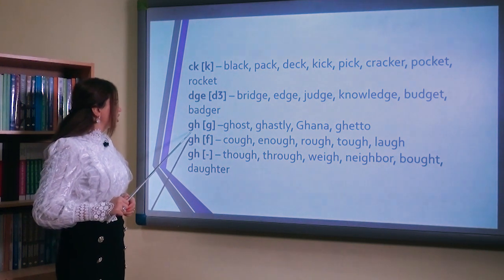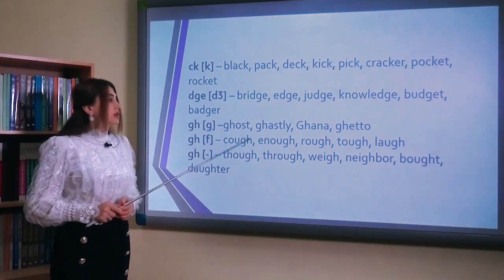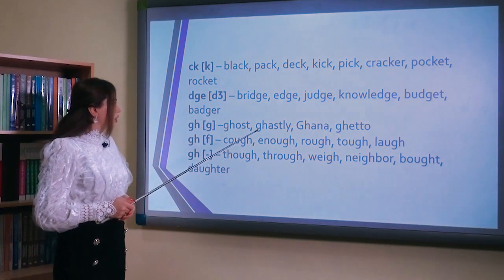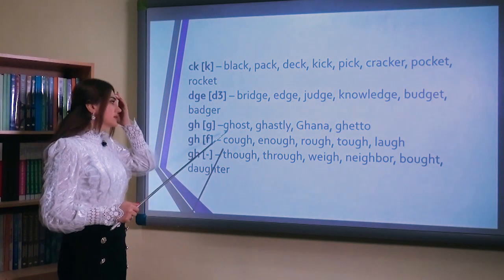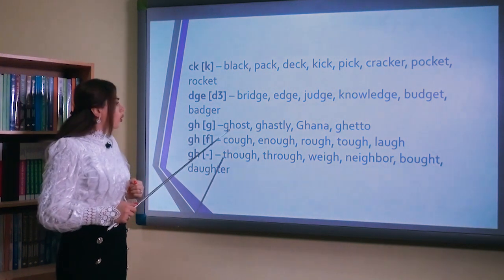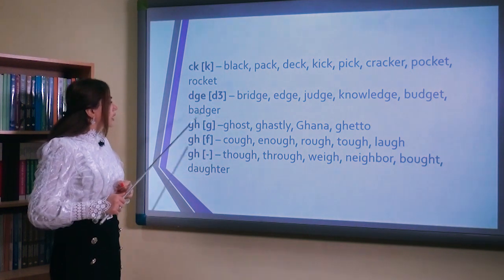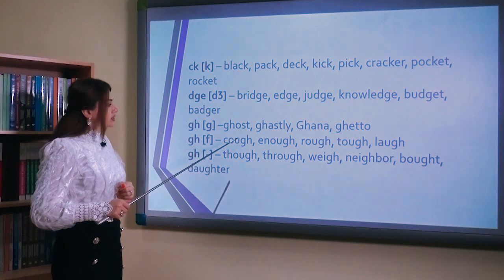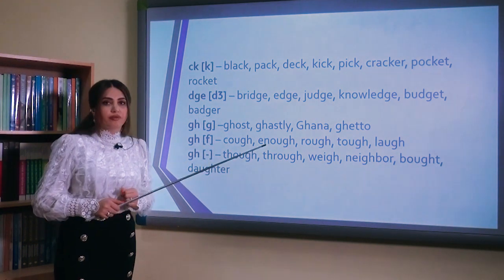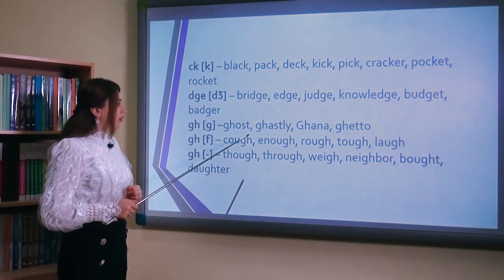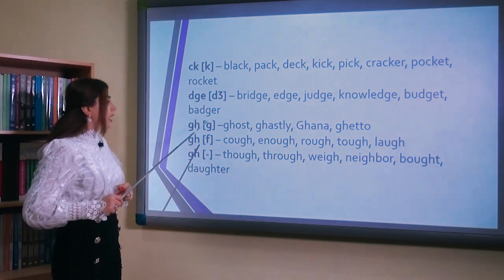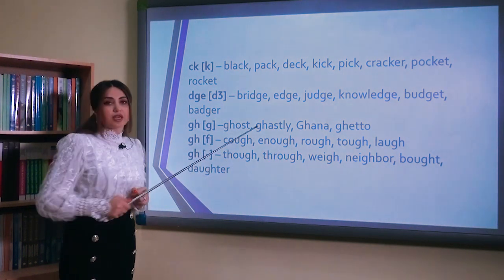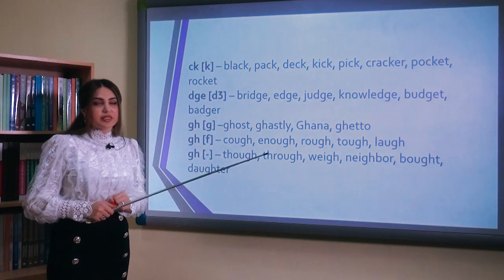The consonant combination gh can be pronounced as /g/: ghost, ghastly, Ghana, ghetto. Gh hərf birləşməsi /g/ (q) səsini verir — ghost və digər sözlərdə olduğu kimi. It can also be pronounced as /f/: cough, enough, rough, tough. Gh hərf birləşməsi həm /g/, həmçinin /f/ (f) səsi də verə bilər — cough, enough və s. bu tip sözlərdə.